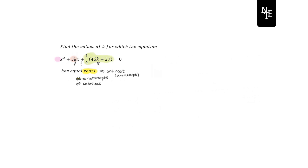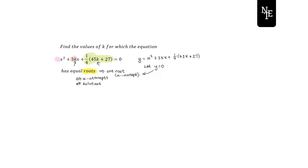If you think about the fact that this left-hand side is a function — y equals x squared plus 3kx plus 1 over 4 into 45k plus 27 — when we let y equal 0, we are finding the x-intercepts of our function. In order to find the x-intercepts, you would go through some process of factorization.